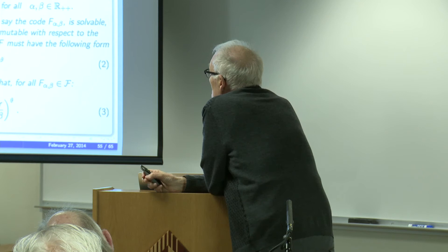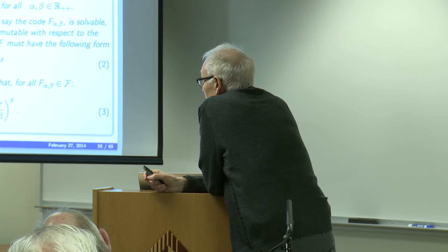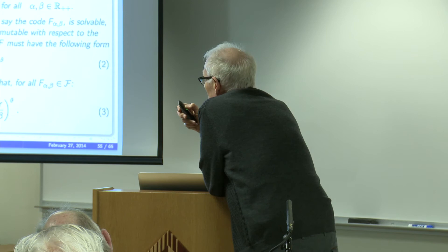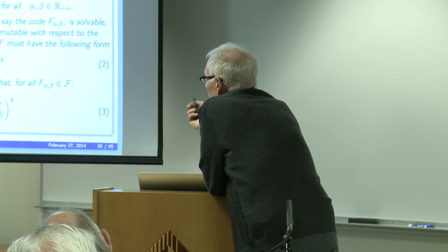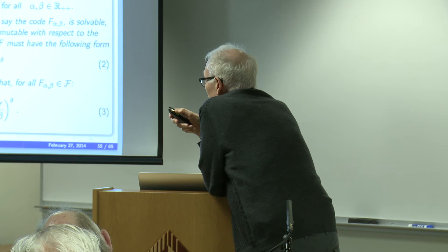Here is the quasi-permutability theorem. Assume a meaningful, self-transforming collection F_{α,β}, and suppose that one code is solvable, strictly increasing in both variables, and permutable with respect to the initial code. Then the initial code must have the form: F(x,r) = x · r^power — a product of x and r to some power. For F_{α,β}, it has the corresponding form, which I will skip.